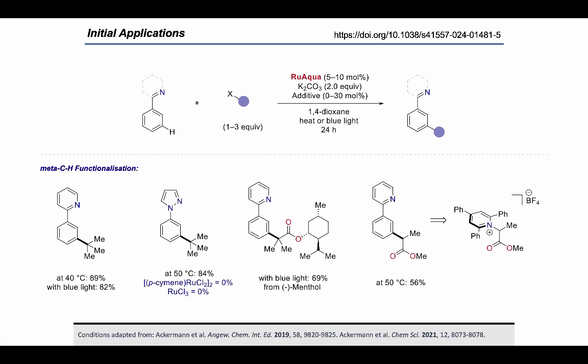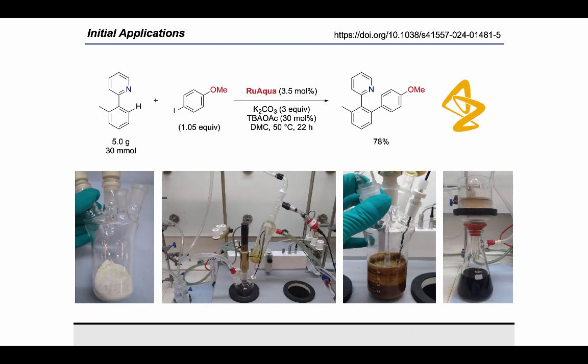We wanted to show that these procedures were robust and easy to implement even in industrial settings, and AstraZeneca were kind enough to run one of our reactions for us at their site in Macclesfield. The reaction was set up using conditions amenable to further scale up, and we were also able to swap the solvent from NMP to dimethyl carbonate to make the procedure more appealing for industrial use. The reaction was run on a five gram scale and was successful, giving the product in 78 percent yield.